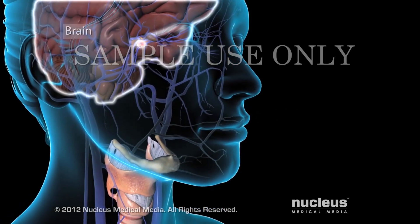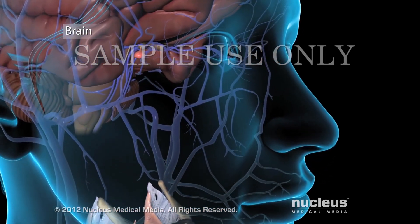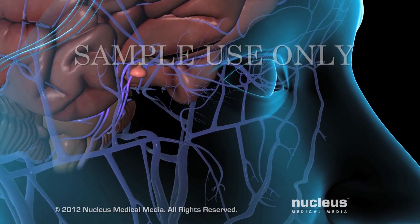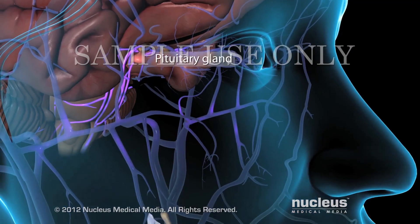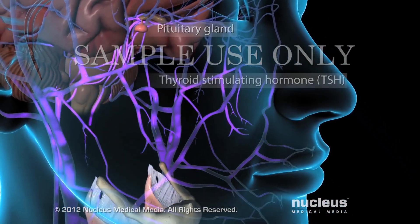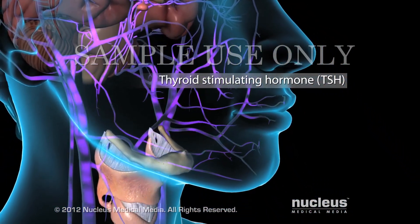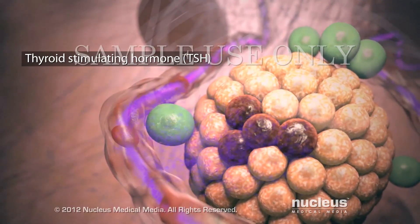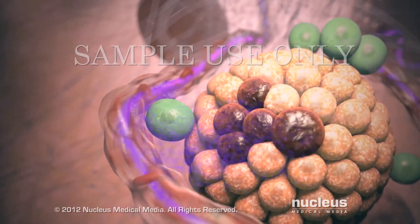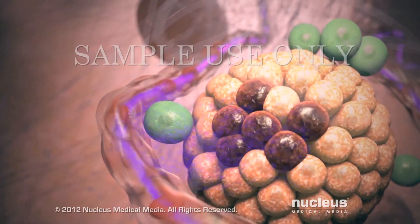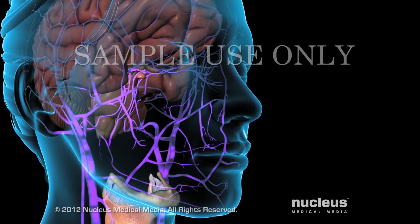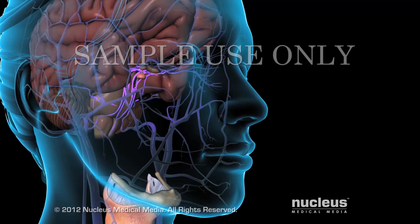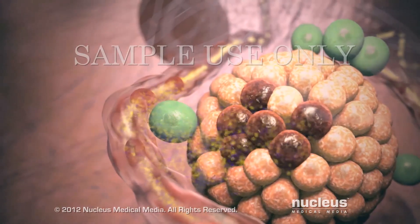After surgery, your doctor may recommend thyroid hormone therapy. Without your thyroid, your body will have low levels of thyroid hormone. This condition stimulates the pituitary gland in your brain to release thyroid-stimulating hormone. Increased levels of thyroid-stimulating hormone cause any remaining thyroid cancer cells to grow faster. If you take thyroid hormone, it will reduce the amount of thyroid-stimulating hormone circulating in your body, which will prevent the cancer cells from growing.